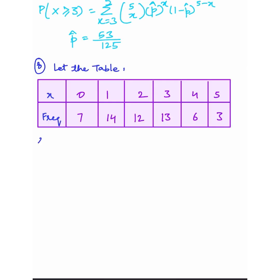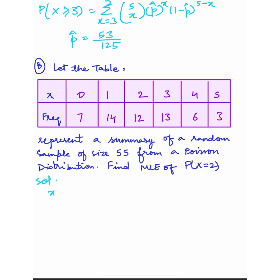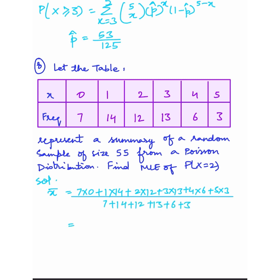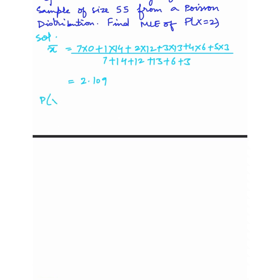Next question: we have a table with a random sample of size 55 from a Poisson distribution. We have to find the MLE of P(X = 2). We start by finding x-bar, which equals summation f_i x_i divided by summation f_i, giving x-bar equals 2.103. The MLE of P(X = 2) equals e to the power minus x-bar times x-bar squared upon 2 factorial, and we substitute x-bar equals 2.103.